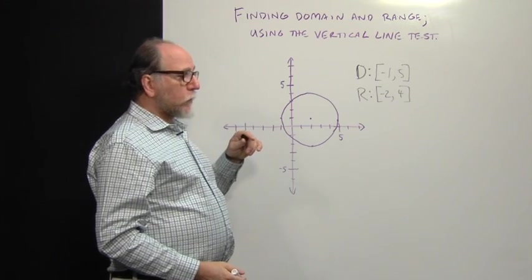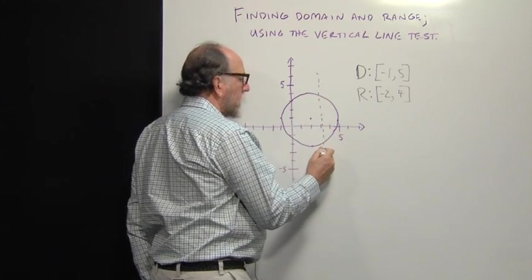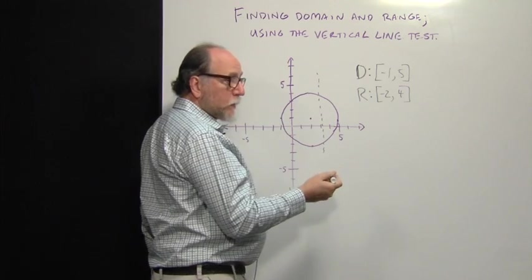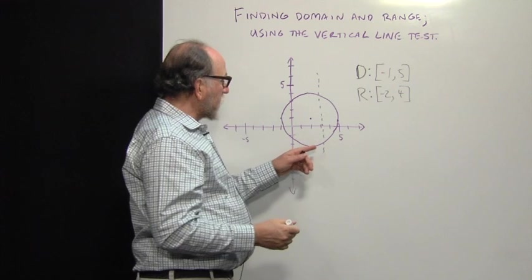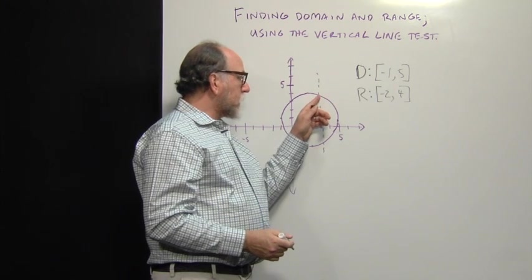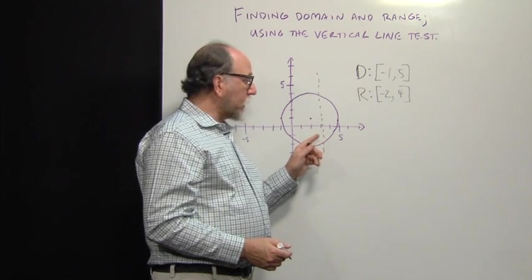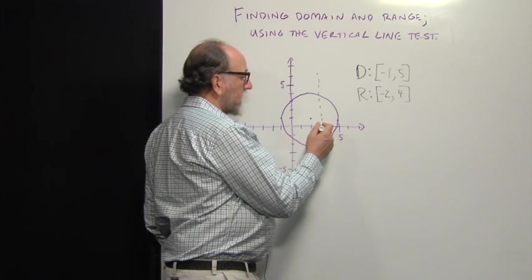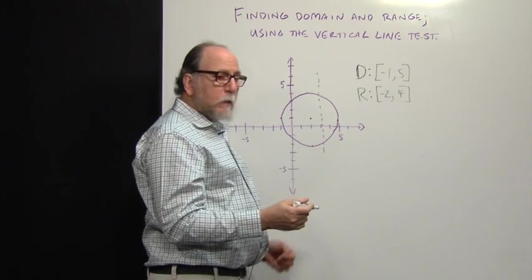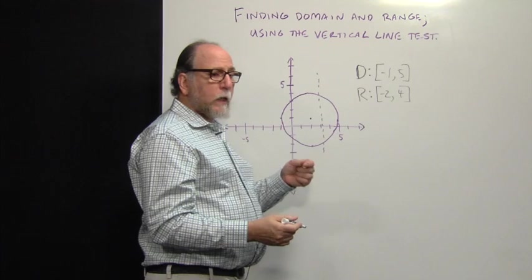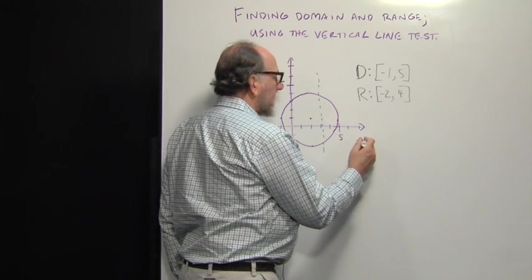Now, to use the vertical line test to see whether this is a function, we pass any vertical line through it. We need to think about all the possible vertical lines. But right away, this one tells us that this vertical line passes through the graph in two places. That means it's not a function because for the x value for this vertical line, it has two y values. Remember functions with one input can only have one output, not two. So this is not a function.